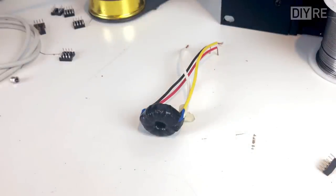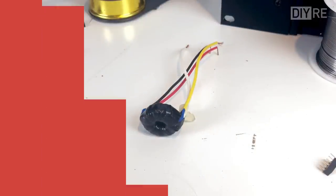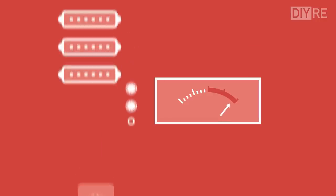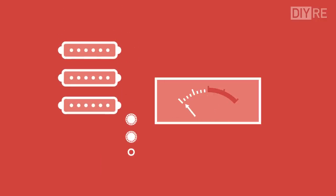Transformers do a lot of different jobs. They step levels up or down, like increasing the output level of a microphone, or bringing an instrument down to mic level. They balance inputs and outputs, match impedance, eliminate ground loops, block DC while passing audio, and the list goes on.